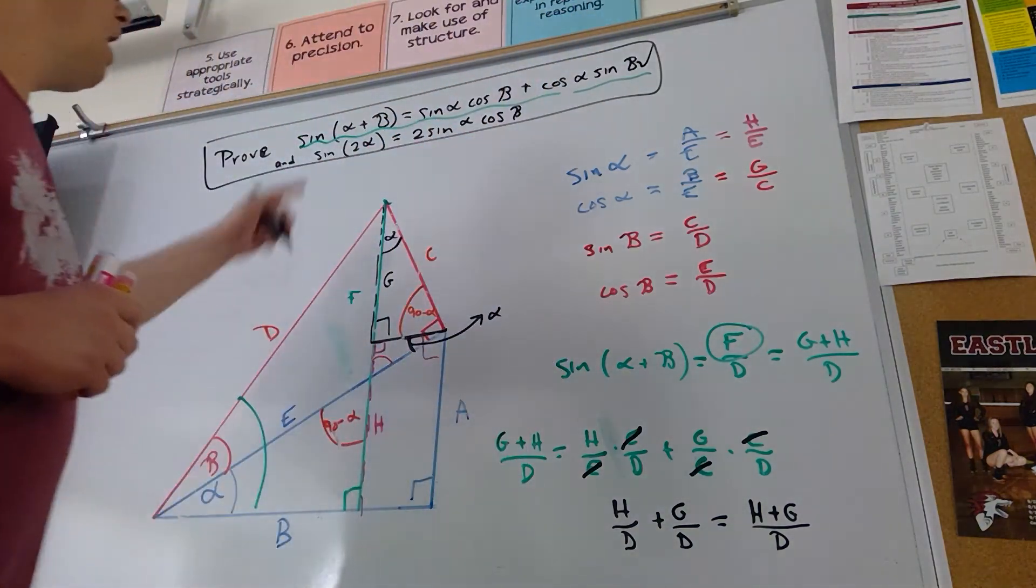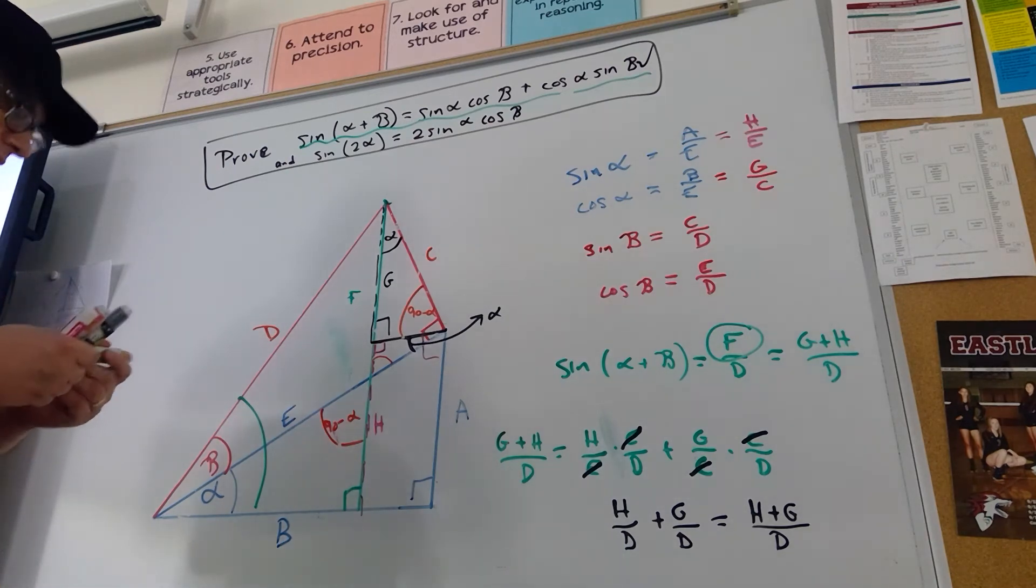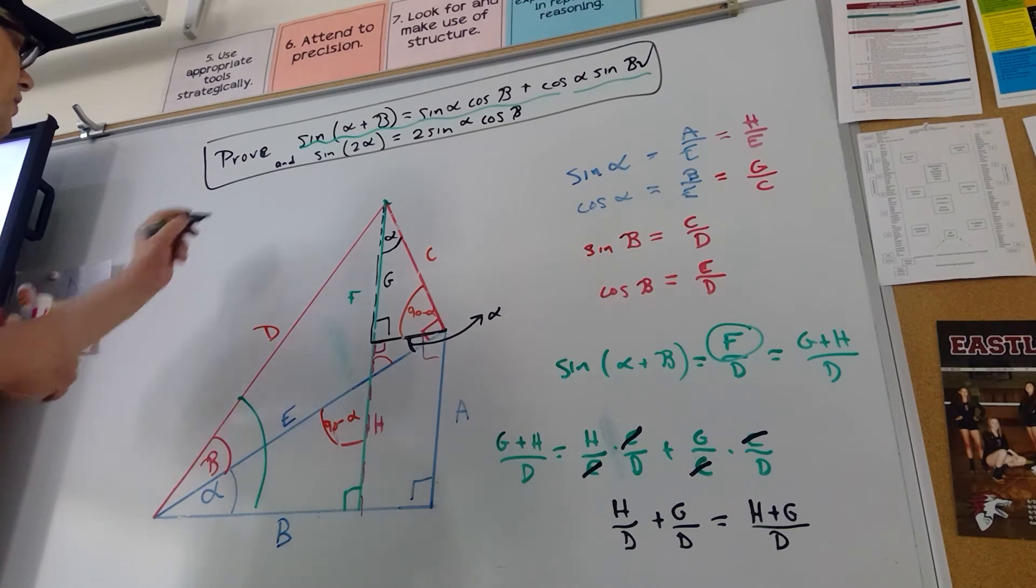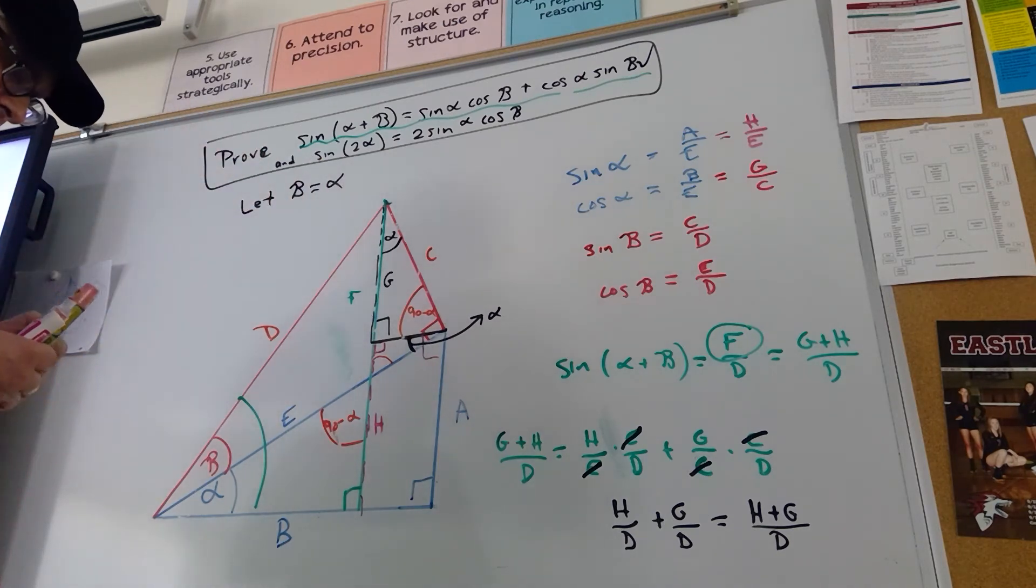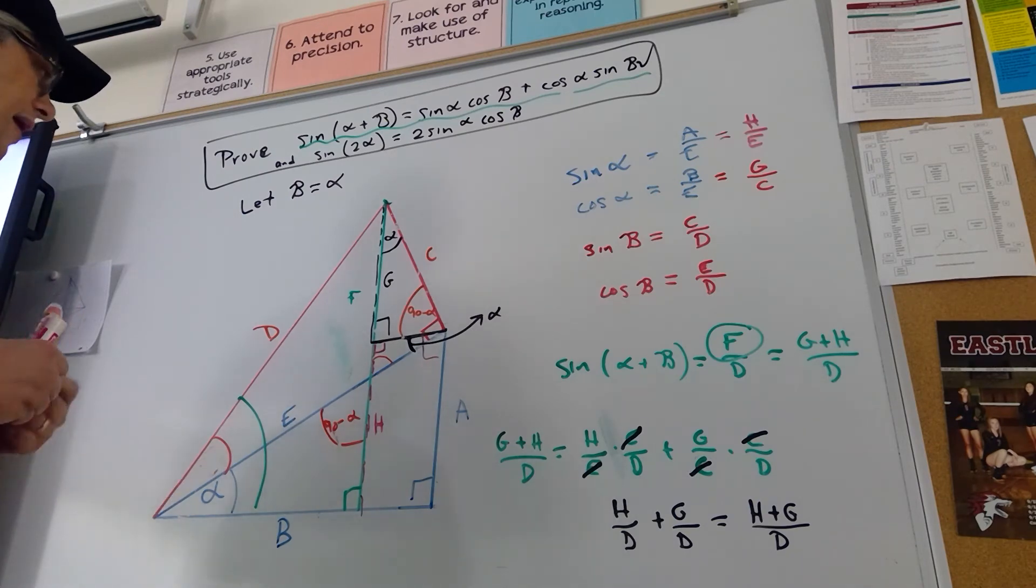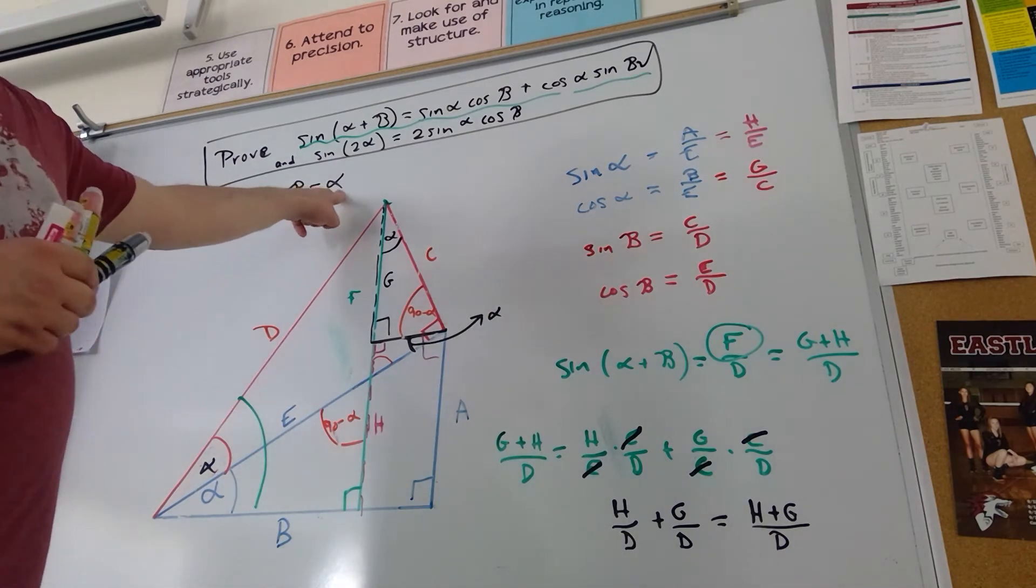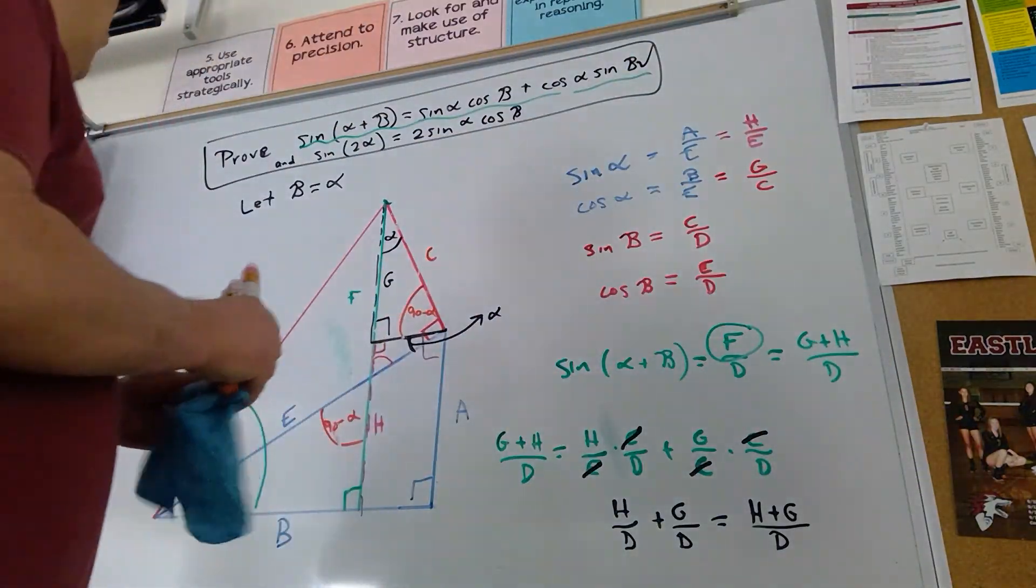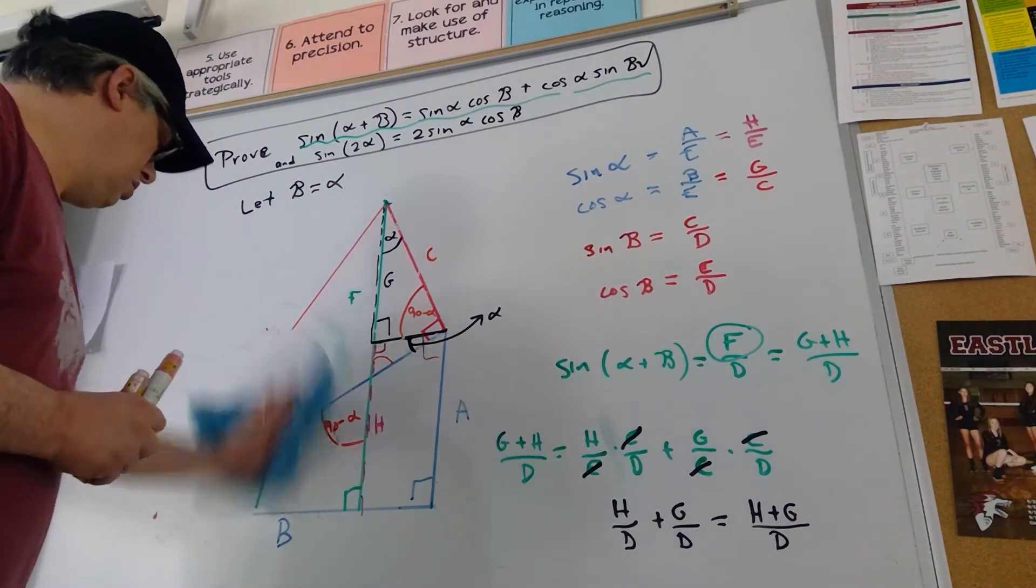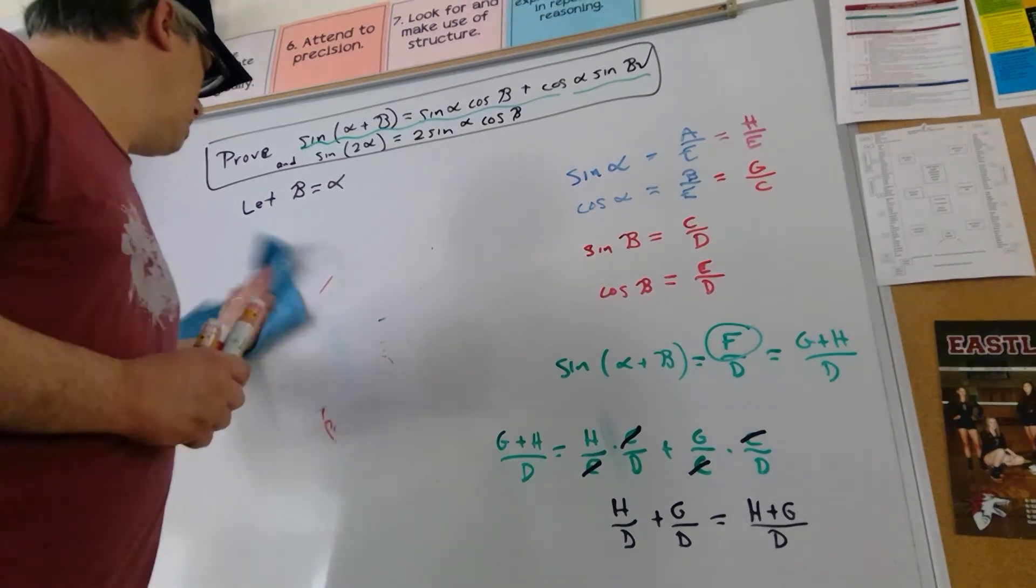All right, what about this one? Well, it's really simple now, guys. I'm just going to let beta equal alpha. Let beta equal alpha. These are arbitrary angles, so why not? And guess what? Now we can just substitute in. Every place where I see beta, I can replace it with alpha. So let's erase the diagram. I think we're done with it.